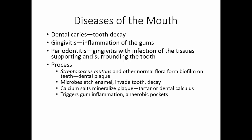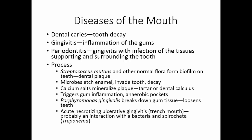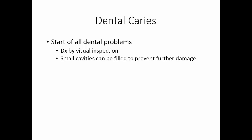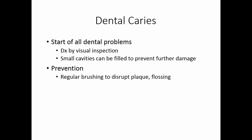Dental calculus triggers gum inflammation, and anaerobic pockets develop where new bacteria can live. Porphyromonas gingivalis actually breaks down gum tissue, loosening teeth — one effect of periodontitis is tooth loss. Acute necrotizing ulcerative gingivitis, also known as trench mouth, is probably caused by an interaction between a bacterium and a spirochete present in the mouth simultaneously. Dental caries are diagnosed by visual inspection, and small cavities can be filled. Prevention involves regular brushing to disrupt plaque, regular flossing, and professional cleaning to remove plaque and tartar.